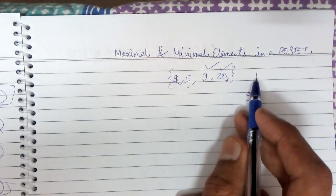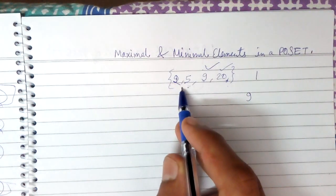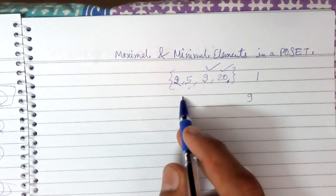We consider the divides relation. 9 and 20 are not related, 9 and 5 are not related, and 9 and 2 are not related.